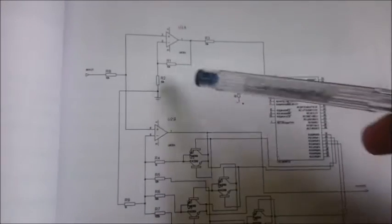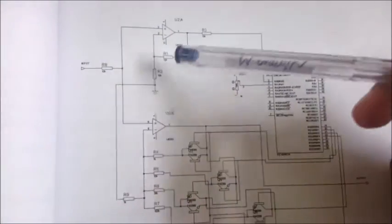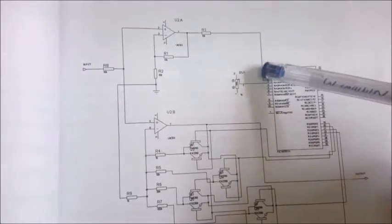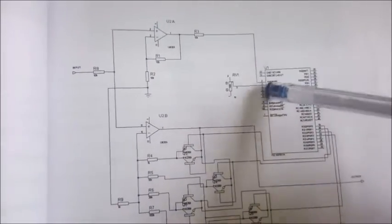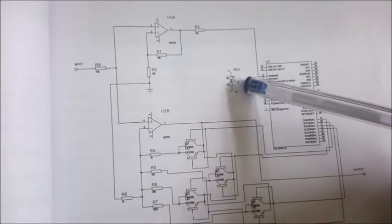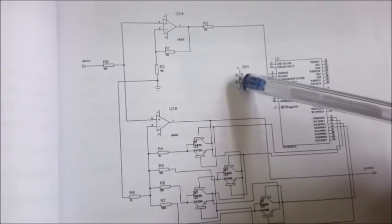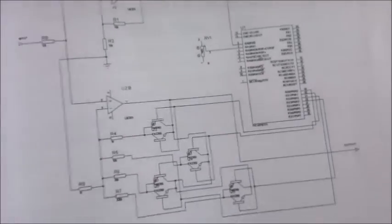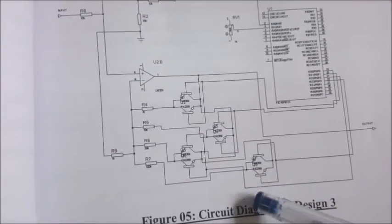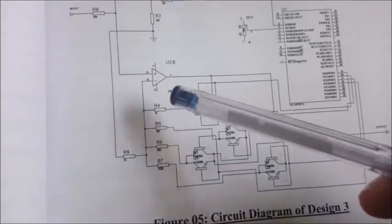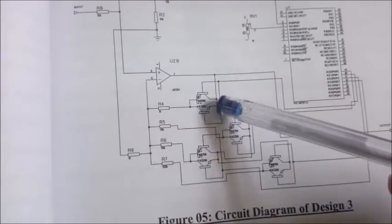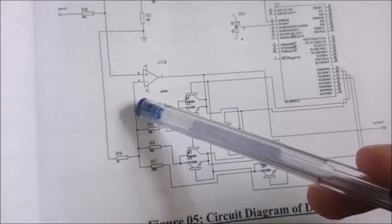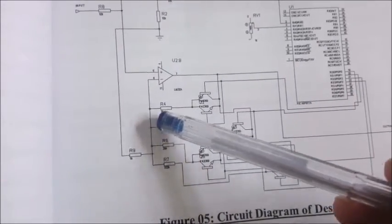First the input voice signal will be amplified and fed to the microcontroller. Then the microcontroller will calculate the RMS value of the signal and compare it with the reference level of the potentiometer. According to the compared values, the microcontroller will switch one transistor at a time. These transistors are connected in parallel as a two-way switch and are connected to the gain resistor of the second amplifier. Changing the gain of the amplifier, the output signal is controlled.